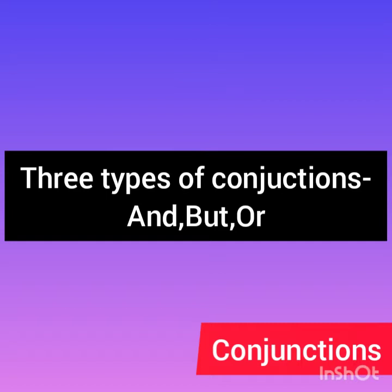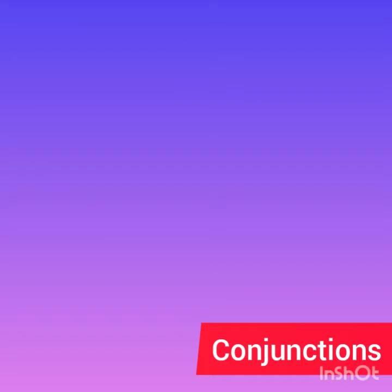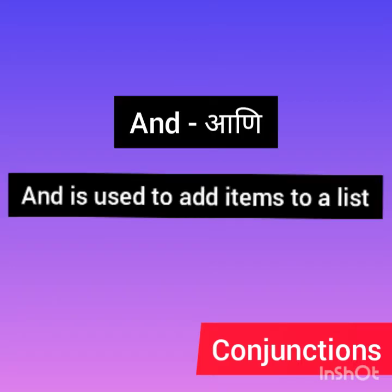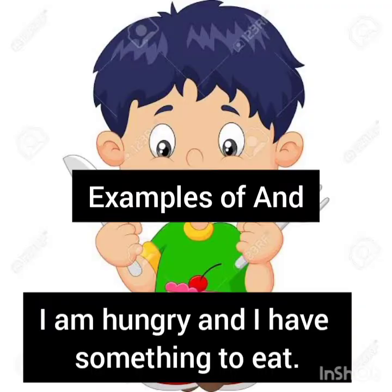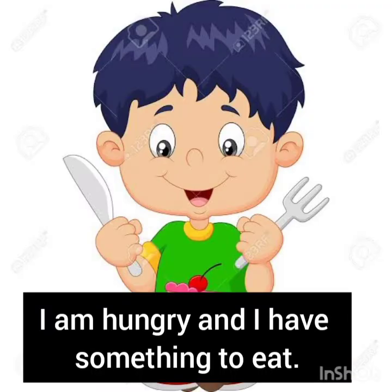Aaj aapan teen type che sanyojak shabda bagnar aahat. And manje ani, but manje parantu kimwa pan, or manje kimwa. Simply, pahila 'and' baga. And is used to add items to a list. And kaa upyog kela jato — jewha dou similar shabda aplele, doni accepted aahet. Tya cha aaplya ek information madhe azun navin information, navin mahiti aplela add karaichi aahe. Tewha 'and' shabdacha upyog kela jato. For example: I am hungry and I have something to eat.